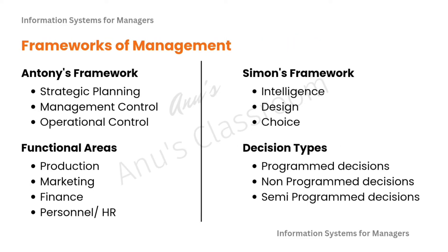What exactly is the framework of management? We have multiple frameworks like Anthony's framework and Simon's framework. In Anthony's framework, we have divided the system of management into functional areas, whereas in Simon's framework, we are dividing it into decision types. According to Anthony's framework, management can be divided into strategic planning, management control and operational control, and the functional areas would include production, marketing, finance, personnel and HR. Whereas in Simon's framework, management is divided into three actions or activities called intelligence, design and choice. In this, we have multiple decision types — like programmed decisions, non-programmed decisions, or semi-programmed decisions.